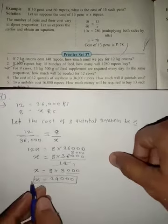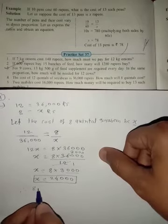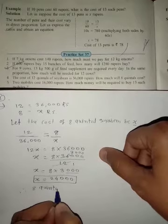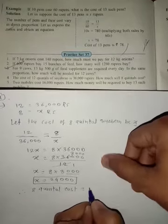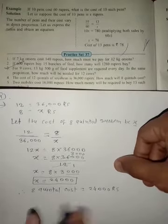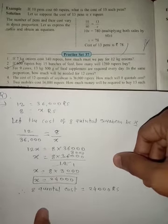So the 8 quintals cost 24,000 rupees. This is the answer: 8 quintals cost equals 24,000 rupees.